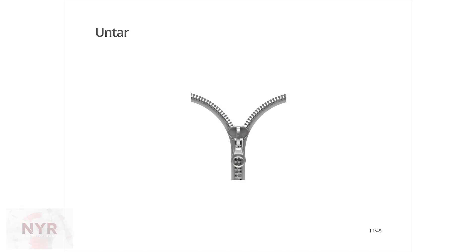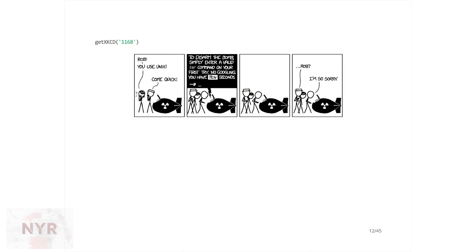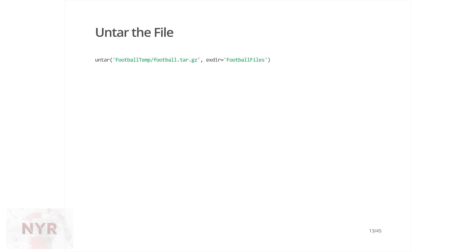Now that we have our file downloaded, we need to untar it. Nothing has ever gone wrong while untarring. If you're in Bash, you have to remember a bunch of flags like x, v, f, z — where does the F go? Pain in the butt. In R, you just say untar, give it the name of the tar file and the directory where it's going — no flags needed. You could also tar, zip, and unzip. They're all separate functions, making your life a lot easier so you don't need to remember all this esoteric Linux stuff.